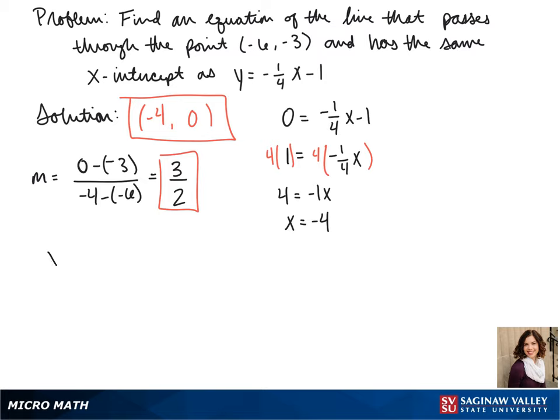We take our slope and our point, and we plug it into point-slope formula. So we have y - 0 = 3/2(x + 4). When we distribute the 3/2, we get y = 3/2x + 6.